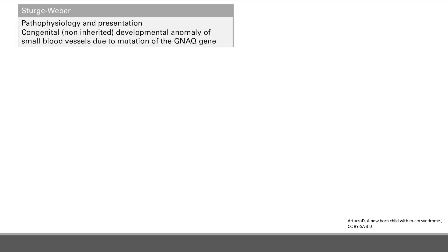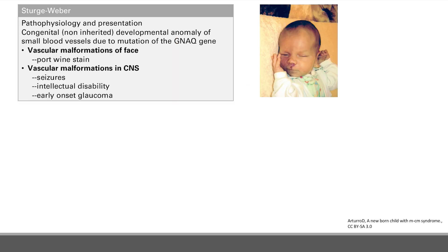Next, we have Sturge-Weber syndrome. This is due to a congenital developmental abnormality — not inherited — of small blood vessels, caused by a mutation of the GNAQ gene. It's a problem with blood vessels, so you're going to get vascular malformations. You get vascular malformations of the face, resulting in a port wine stain, which is very characteristic of Sturge-Weber syndrome.